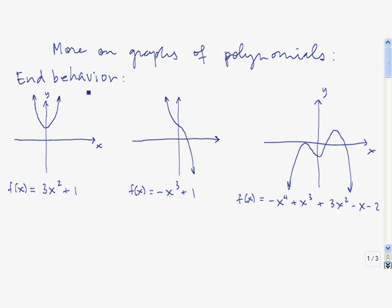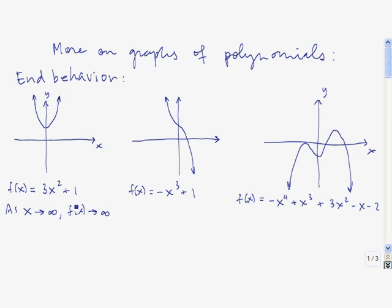Let's take a look at this graph right here, the graph of y equals 3x squared plus 1. We see that as x gets larger and larger and larger, the function values get larger and larger and larger. We write that as follows: as x approaches infinity, f of x approaches infinity. So as x gets larger in the positive infinity direction, the function values get larger in the positive infinity direction.